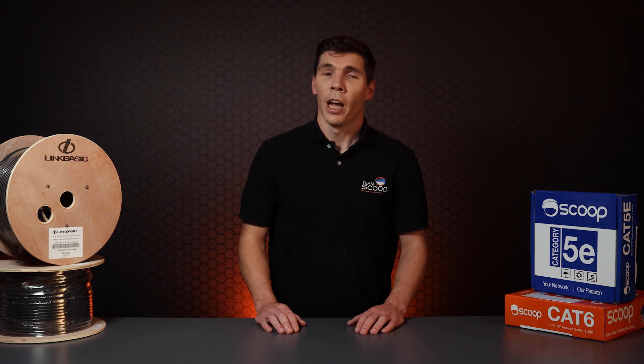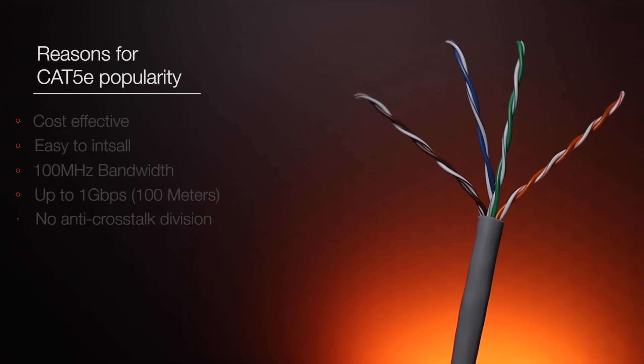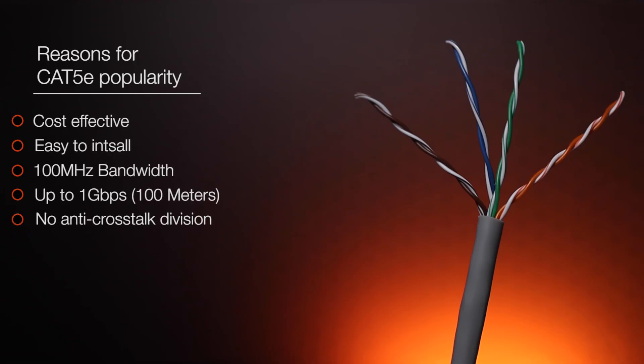Cat5e is arguably the most commonly used category of Ethernet cable in South Africa today, and it's capable of up to gigabit speeds under 100 meters. The reason why it's so popular is that it's cost effective, easy to install and to terminate. It uses 100 megahertz of bandwidth without additional crosstalk division.